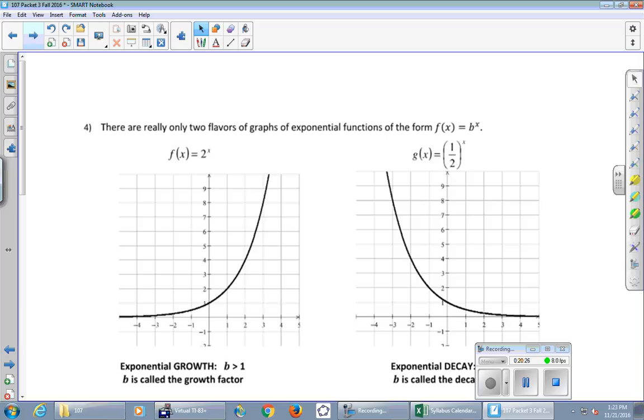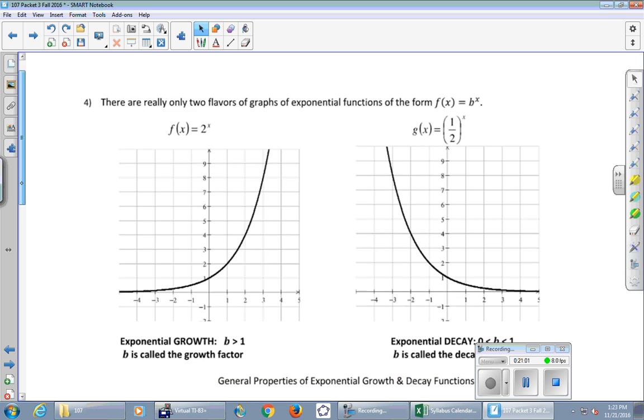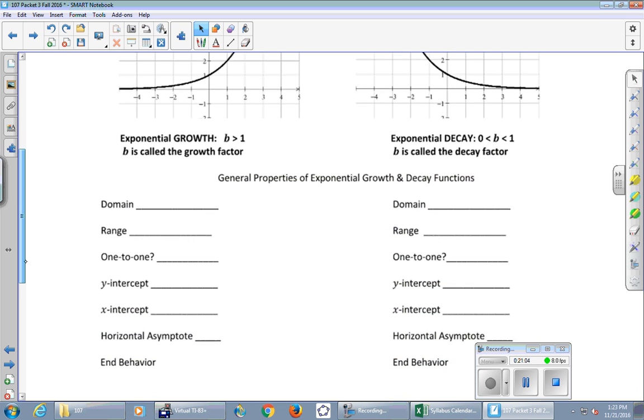It says here, there are really only two flavors of graphs of exponential functions of the form f of x equals b to the x. Notice that we don't have an a value in the front. That's okay. Just b to the x. So here are two examples. Two to the x on the left and one half to the x on the right. Two to the x looks an awful lot to me like the salary graph that we were, remember the points I plotted? And so this guy right here is just two to the x, and then the other one is one half to the x. And despite the fact that they look pretty different, they actually have a lot in common.